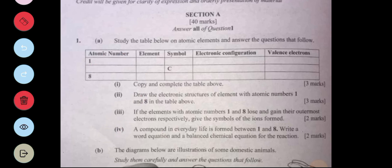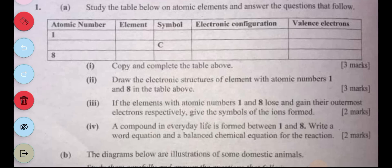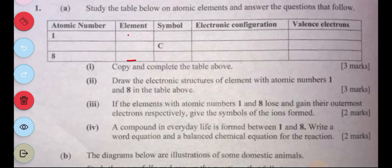Part three: If the element with atomic number 1 and 8 lose and gain their outermost electrons respectively, give the symbols of ions formed. We are talking about hydrogen and oxygen. When hydrogen loses, the ionic form is H+. For oxygen with 2,6, oxygen will gain 2 electrons. When it gains, it has a charge of minus, so O 2 minus.